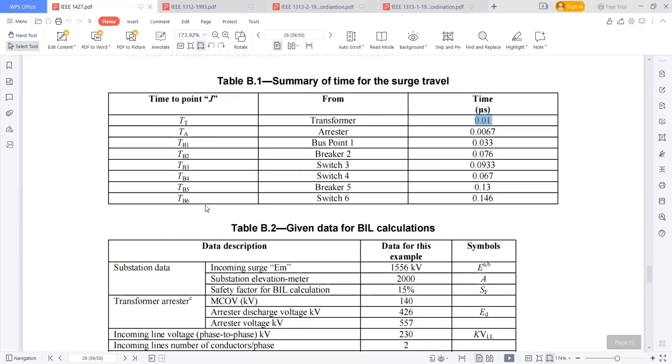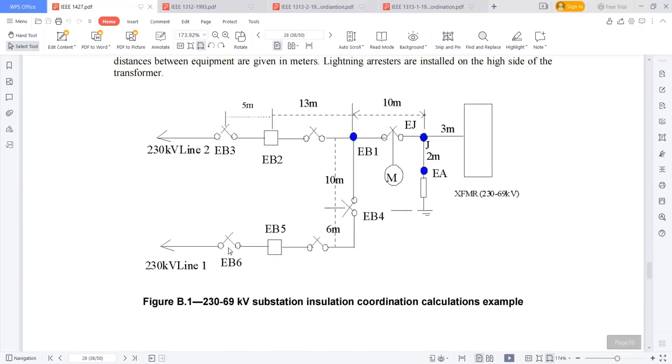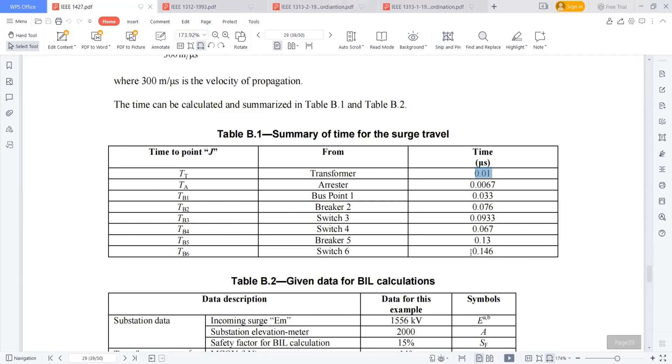If you see the EB6, which is 61 meters, it is taking nearly 0.146 microseconds for the surge to travel. That's the table. The first step I am calculating the time for the surge travel.